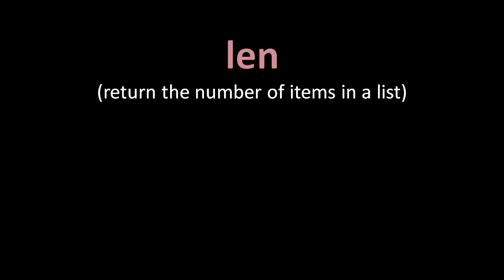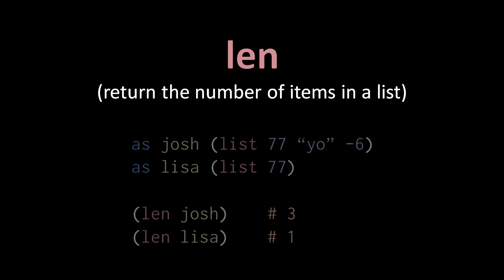The len operator, short for length, returns the number of items in a list. Here we have two lists, one with three items and assigned to the variable Josh, the other with one item and assigned to the variable Lisa. So the expression len Josh returns 3, and the expression len Lisa returns 1.